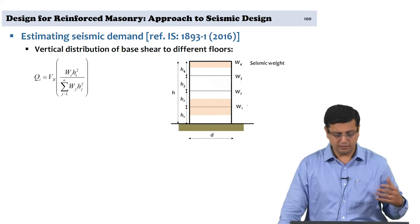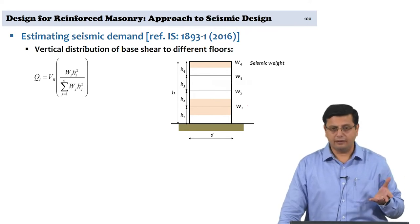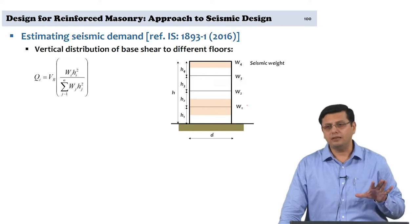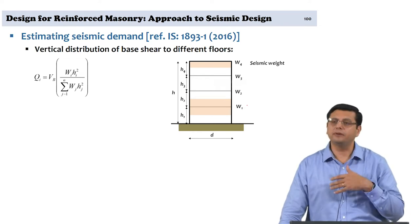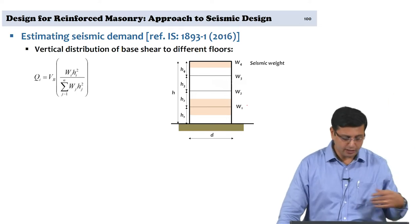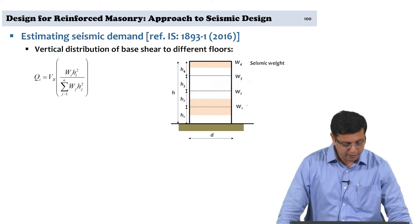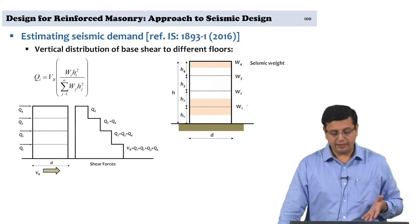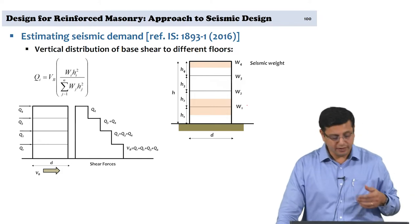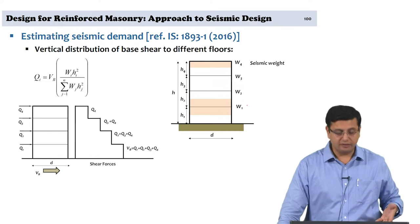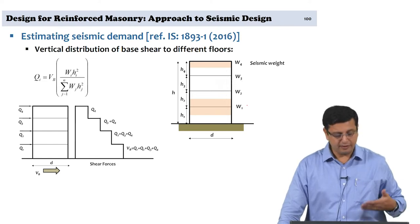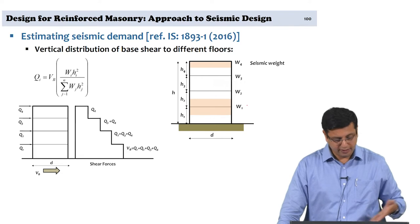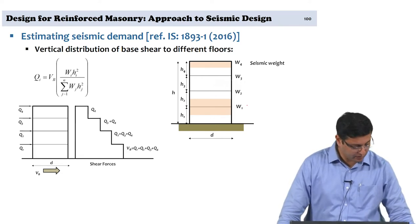In a masonry structure, since most masonry structures have symmetrical plan layouts and continuous load-bearing walls, the mass is typically quite similar along the height except for the topmost story. Once Q1, Q2, Q3, and Q4 are estimated at each floor, we distribute them to the walls. The summation of all four shears Q1 to Q4 gives the total base shear VB.